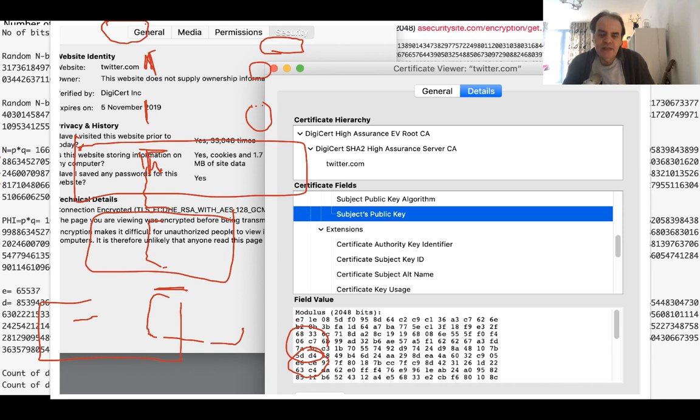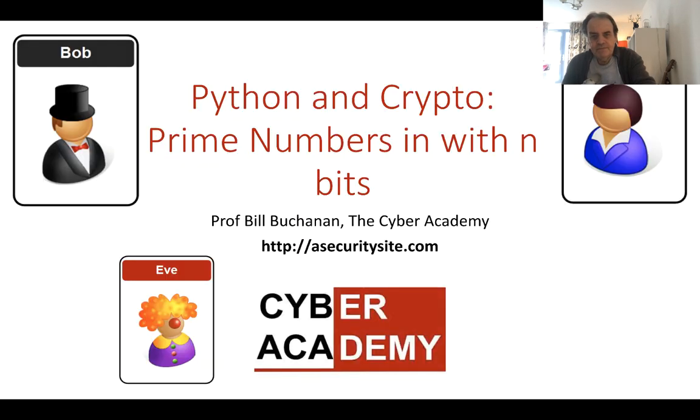Okay, so we'll often see RSA 2048 on digital certificates. So that's normally the default that we have, and we can see here for Twitter that the modulus on the RSA key is 2048 bits long. Okay, so that's been an introduction to prime numbers with n bits.